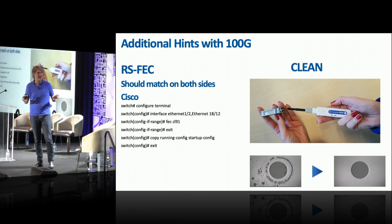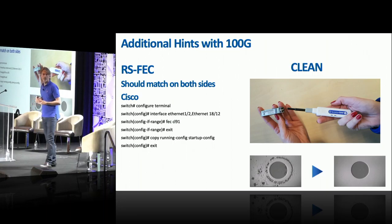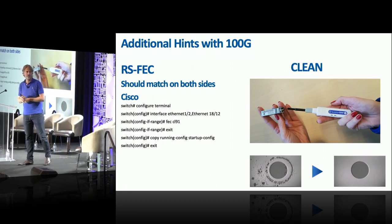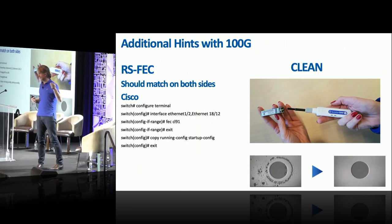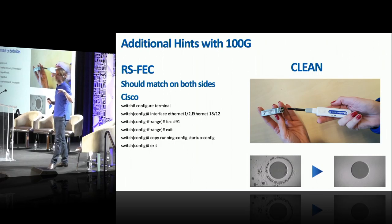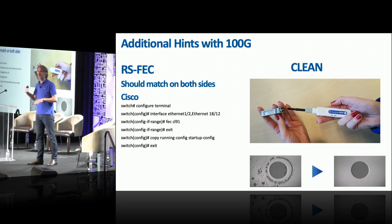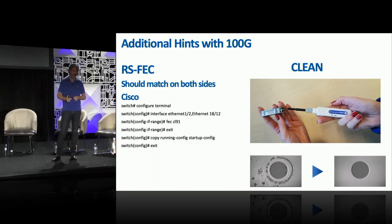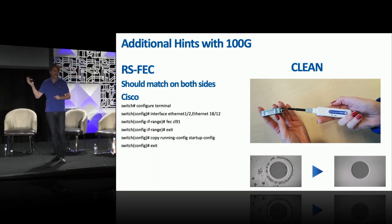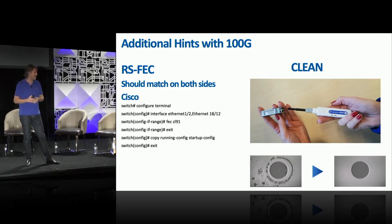A couple of additional hints from our 100G testing: RS-FEC can cause issues. For example, a Mellanox 100G card may have RS-FEC always on, while an LR or SR optic on the other side has it off — vendors implement RS-FEC differently. If you can't get a 100G link up, check RS-FEC. There's a video on our SolidOptics YouTube channel that covers this and could save you days of debugging.